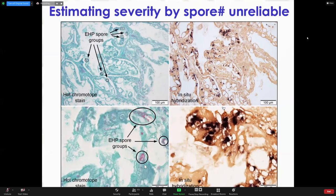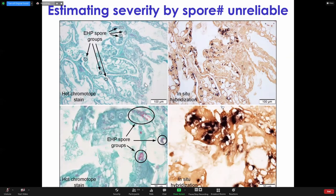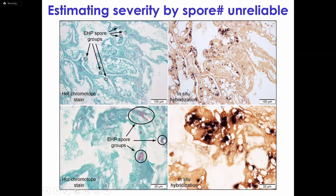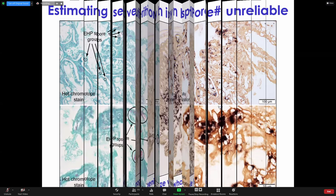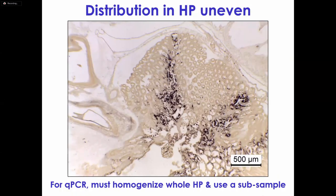Here, at low magnification and then higher magnification, using a special stain — hot chromotrope — to make the spores show up, you can see very few areas of spores even using this specific stain. But when you use in-situ hybridization, you can see that the infection is much more widespread than the number of spores would indicate. So you can't get an idea of the level of infection by just looking at the spores.